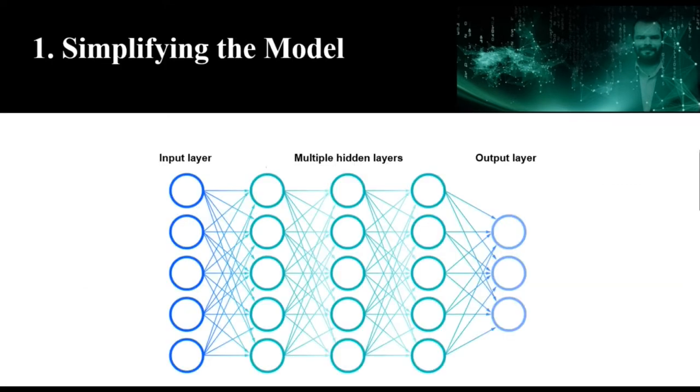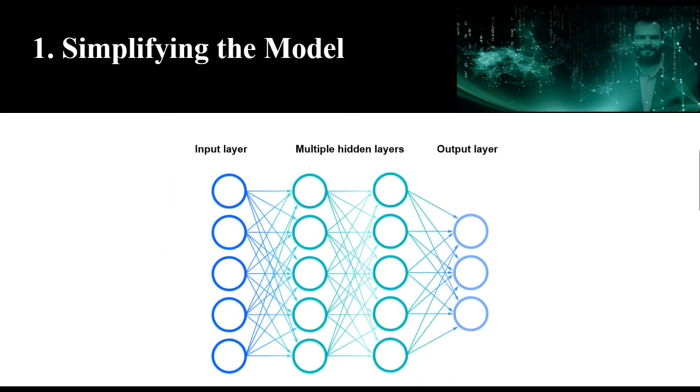The first method that we can apply to avoid the overfitting is to decrease the complexity of the model. To do that we can simply remove layers and make the network smaller. Note that while removing layers it is important to adjust the input and output dimensions of the remaining layers in the neural network.